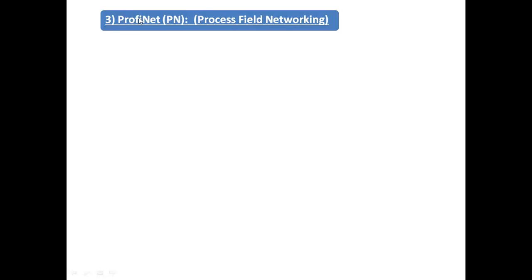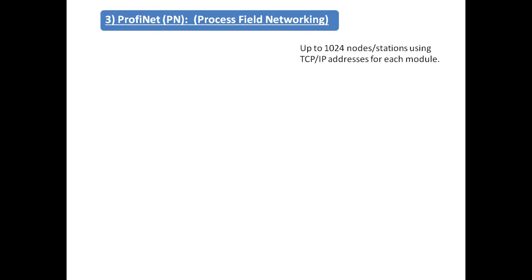Next is Profinet — also known as PN. If you expand this, it stands for Process Field Network. It supports 1024 nodes or stations, using TCP/IP addresses for each module. Each module should have a unique IP address — like internet addresses starting from 192.168.0.1, and so on. Different brands have their own IP address starting formats.